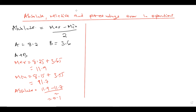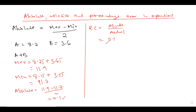Still on the same question, there are also relative and percentage errors. If you want to get the relative error of an operation, from the first lesson we introduced that relative error is given by the absolute error of that operation divided by the actual value. So if I wanted to get the relative error of this operation, it would be the absolute value we got, which is 0.1, divided by the actual value, which is 8.2 plus 3.6 = 11.8.